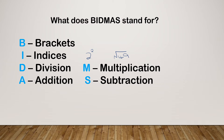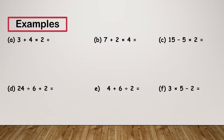Division and Multiplication, and Addition and Subtraction, are written next to each other rather than separately because these are equally weighted. So if I have a sum that is just division and multiplication, or just addition and subtraction, I still work from left to right as normal. So let's look at some examples.